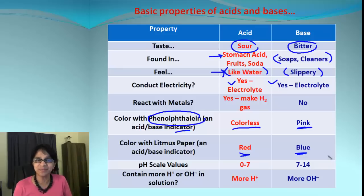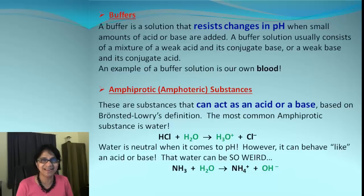If you have red litmus, that will turn blue. pH: 0 to 7 for acids, 7 to 14 for bases. Which ions are more? The acids have hydrogen ion in excess and bases have hydroxide ion in excess.